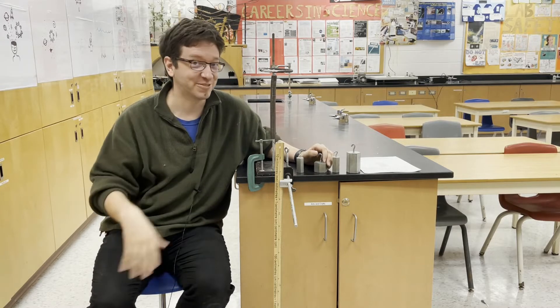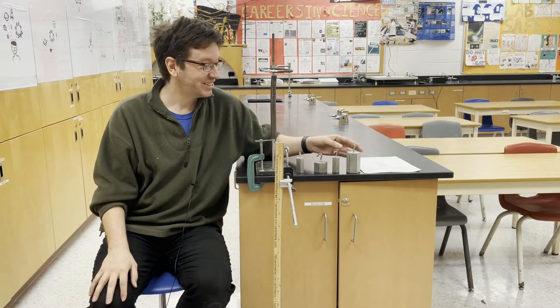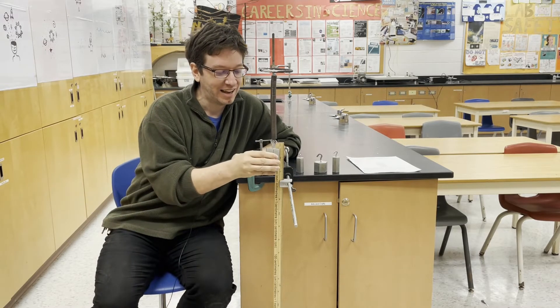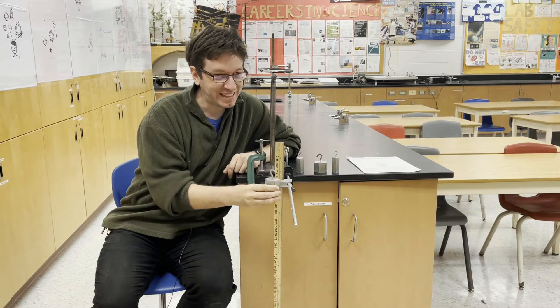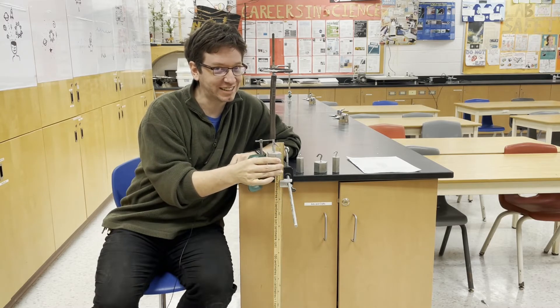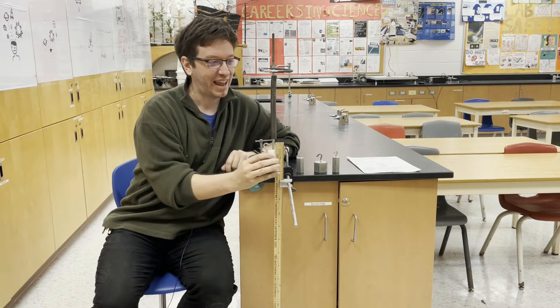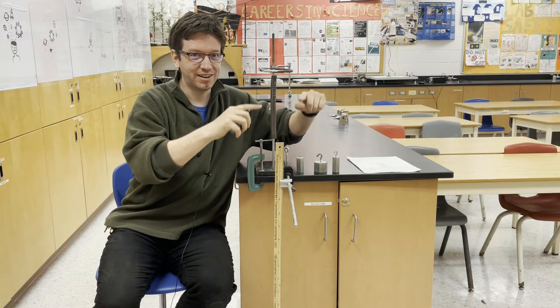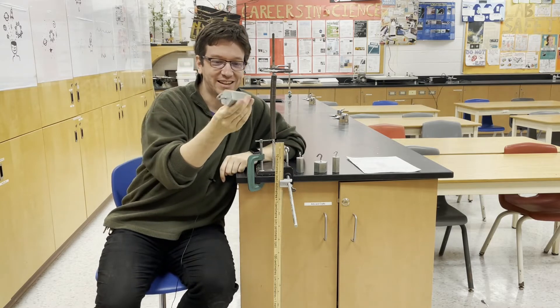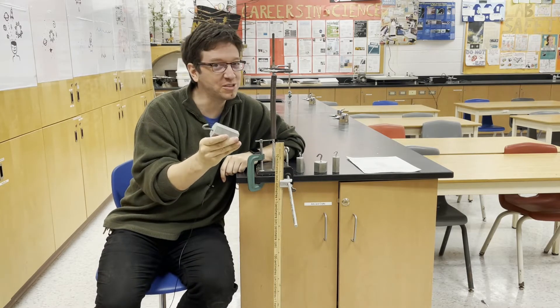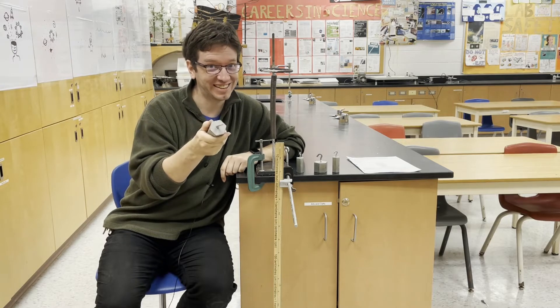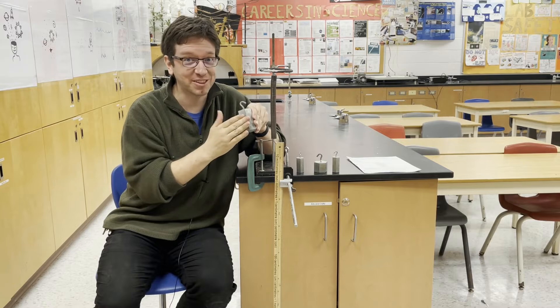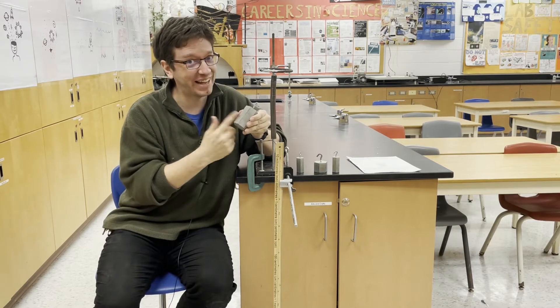And you're going to need your spring constant for the next challenge. The next challenge will be if I take this one kilogram mass, and instead of slowly guiding it to its equilibrium position, if I just release it from rest here, at what height from the floor should I move this ring stand? So that this mass gets as close to the floor as possible without touching it. We call this the bungee jump challenge. You want to give this mass a thrill, but you don't want to have it smack into the ground.